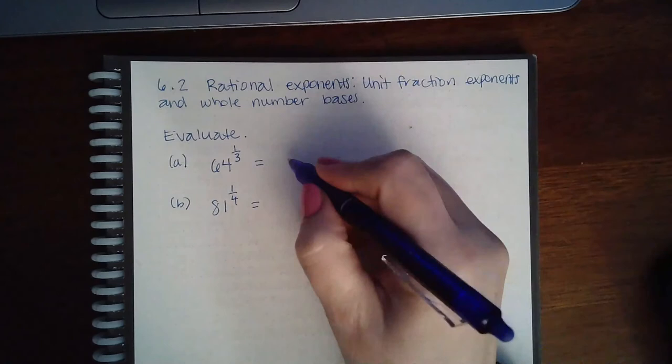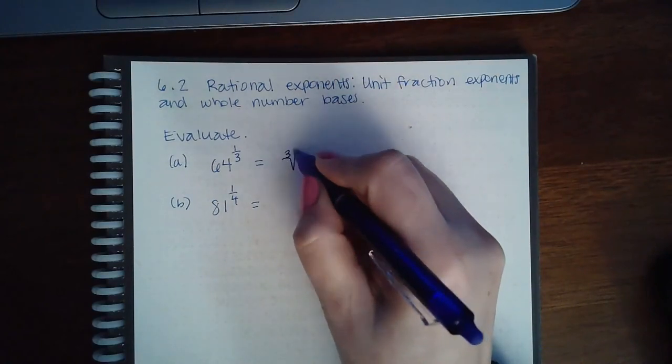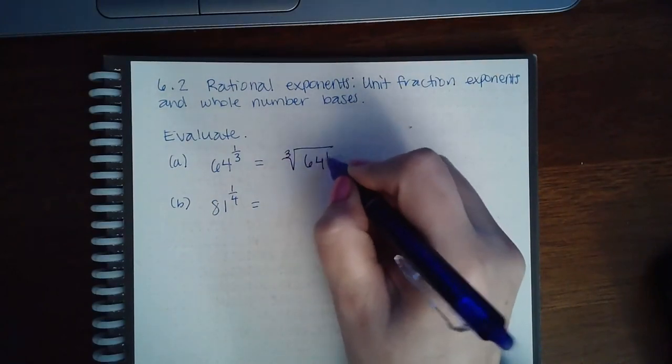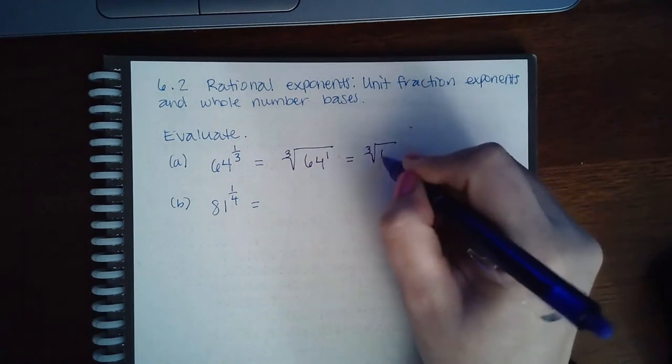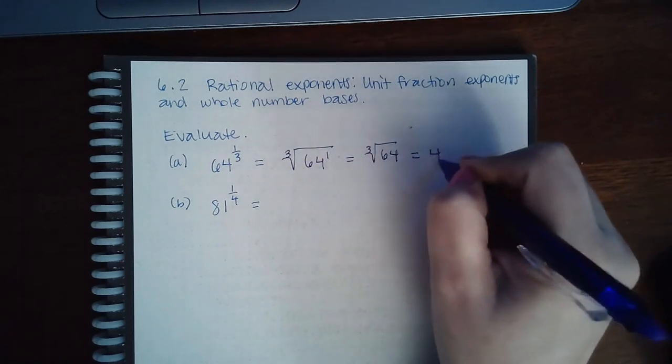So first we have to put it into its radical form. So 3 is my index, and 1 is my power. And so that's just the cube root of 64, which we already know is 4.